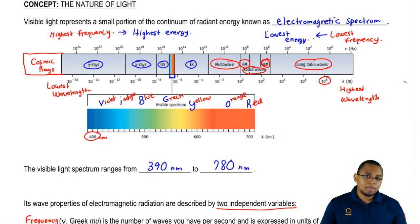It's important that you remember the order of these different types of light sources because your professor will easily ask this on the exam: rank these in terms of increasing energy or increasing frequency. So it becomes important to remember the order.